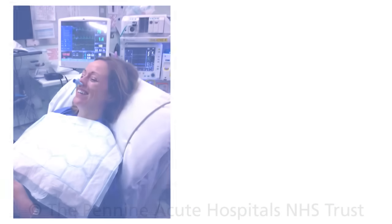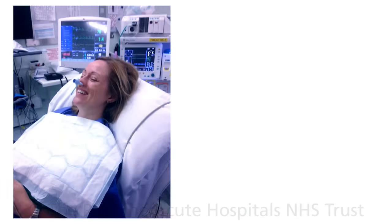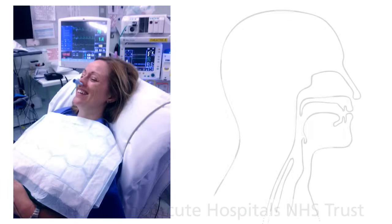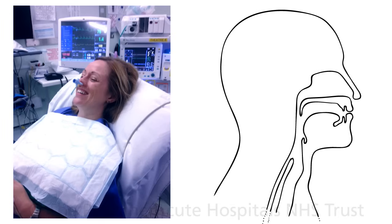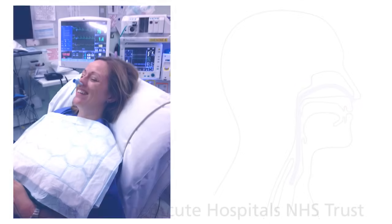An awake fibre optic intubation is when a breathing tube is inserted into your windpipe whilst you are awake. After the position of the breathing tube is confirmed, we will send you off to sleep for the duration of your operation.